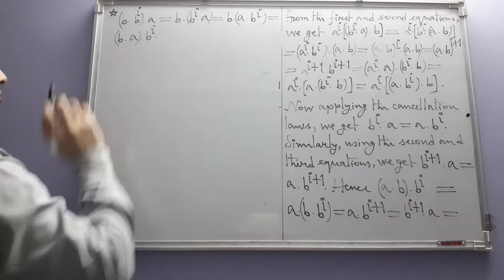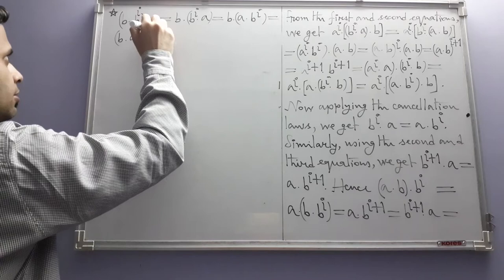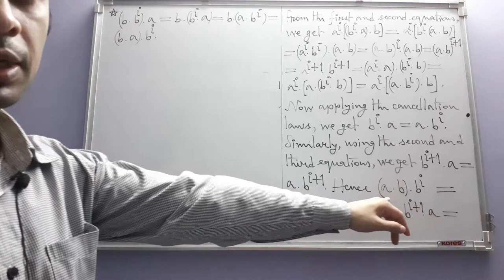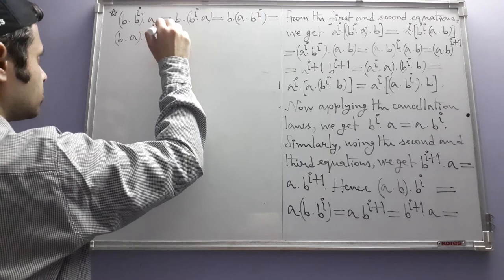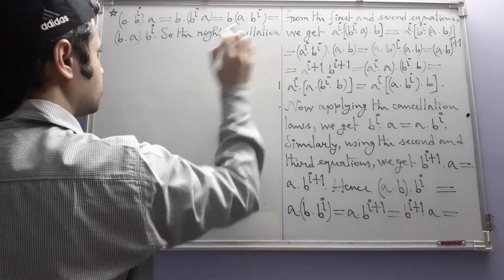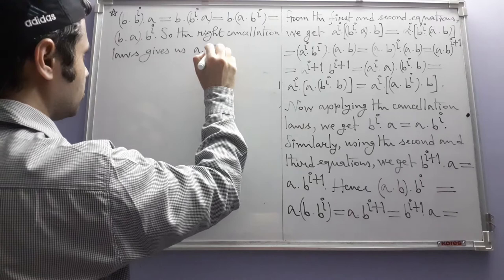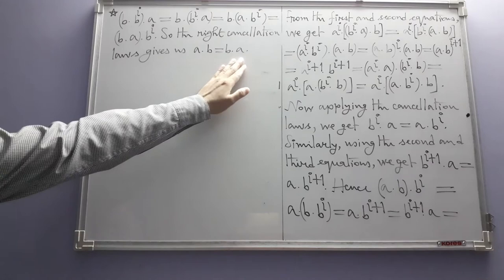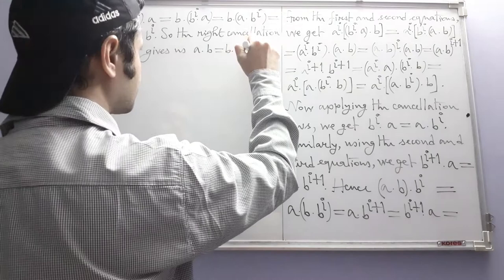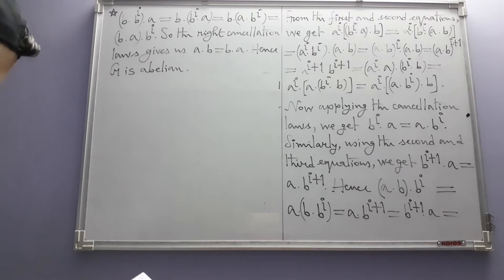Looking at the term with which we started (a·b·b^i) and the one where we ended (b^i·b·a = b^i·(a·b)), we apply the right cancellation law. This gives us a·b = b·a. Since this holds for all a and b in G, this proves G is abelian. Hence G is abelian, and the solution ends here.